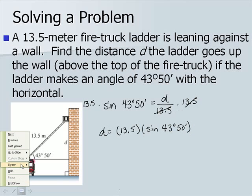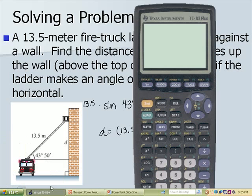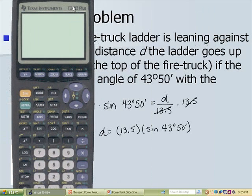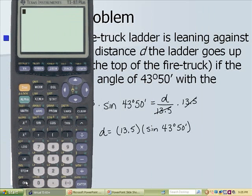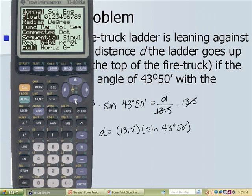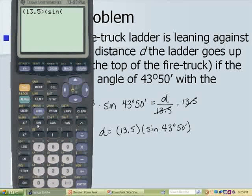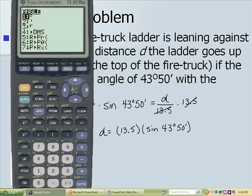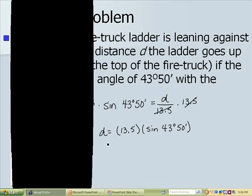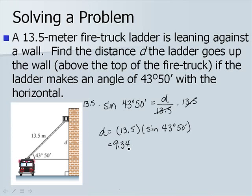Let's actually perform this calculation on the calculator. We want to make sure we're in degree mode, and we have 13.5 times the sine of 43 degrees 50 minutes. We get a value of d of 9.3496. So d is approximately 9.35 meters.